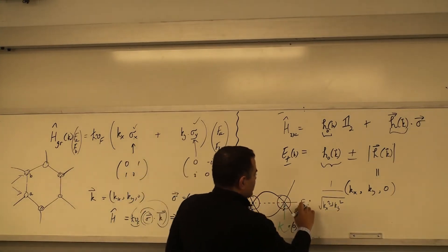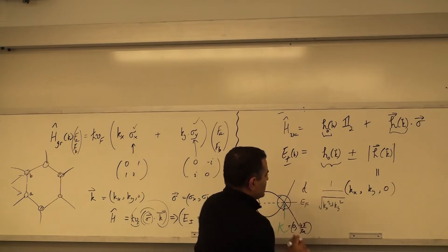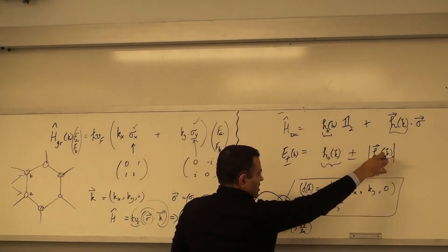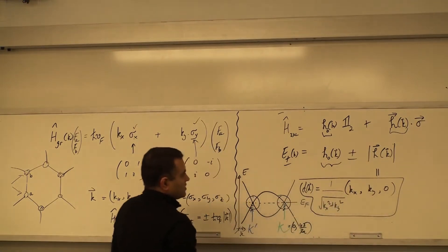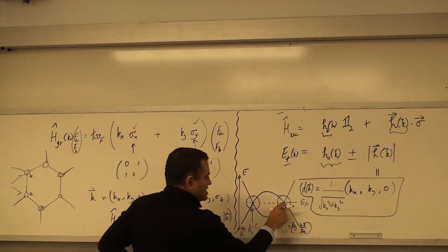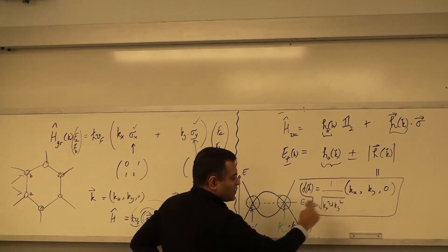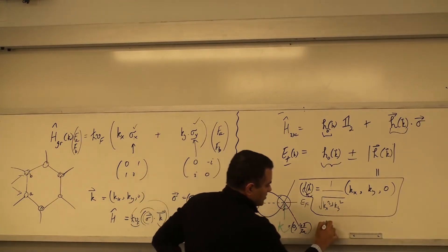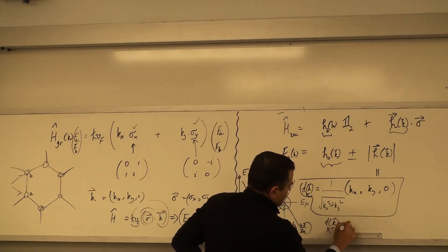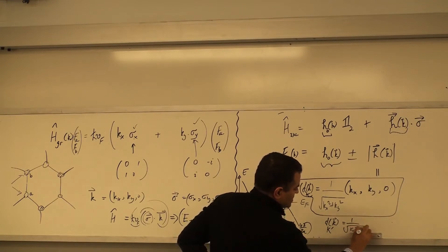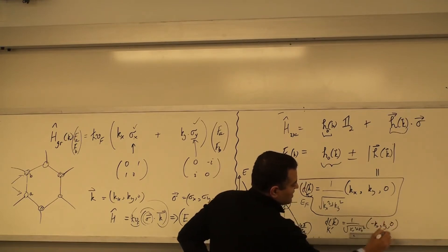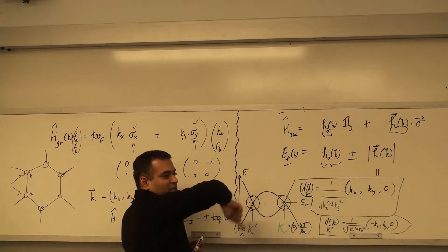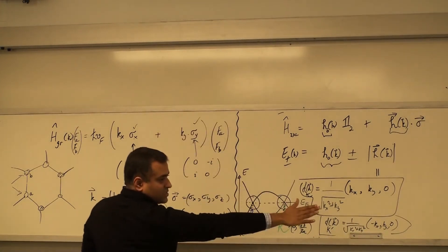So this vector D(K), which is the normalized form of H(K), has D(K) = (K_x, K_y, 0)/|K| in the K valley. In the K' valley, it becomes (-K_x, K_y, 0)/|K|. You can see that the two vectors are going around in opposite orientations — one spinning one way, the other spinning the opposite way, because of the plus K_x versus minus K_x. This just comes out from solving the Hamiltonian.